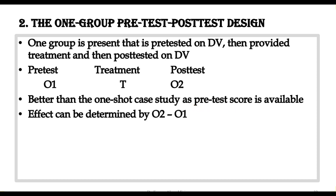What is the advantage of the pre-test score being available? If the pre-test score is available, then we can find the effect size — we can find the effect of the treatment. We find the effect of the treatment by subtracting the pre-test score from the post-test score, so we go for O2 minus O1.